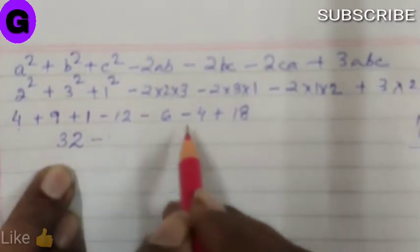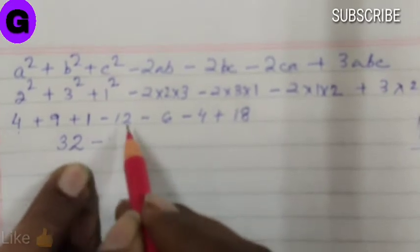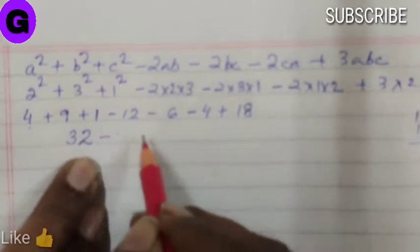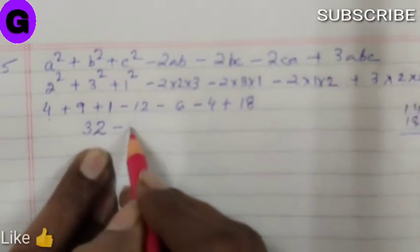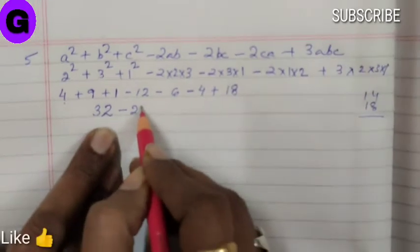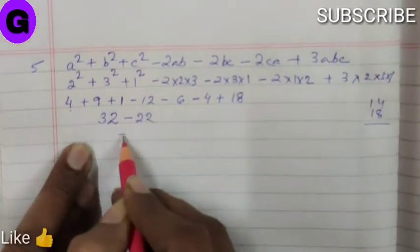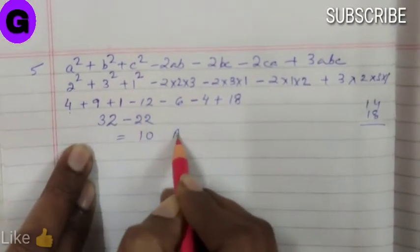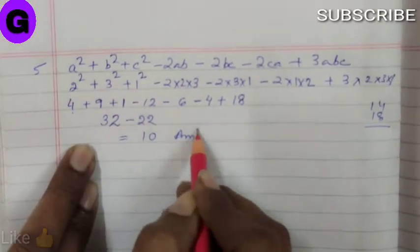Now let us add all the negative numbers. 12 + 10 is 22, so minus 22. We get the answer 10.